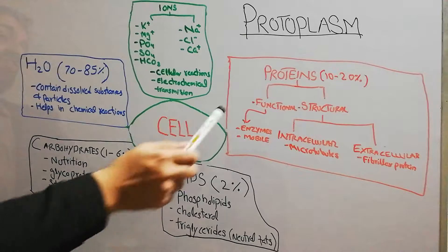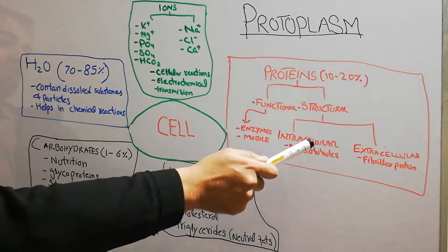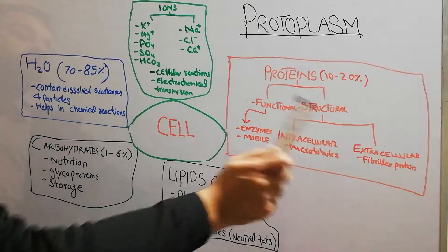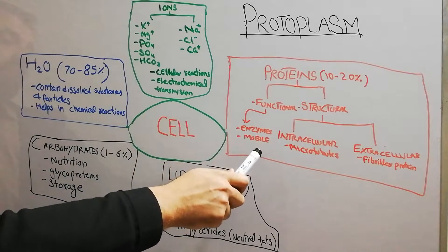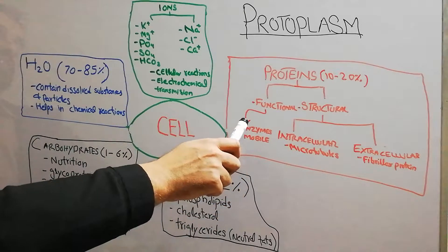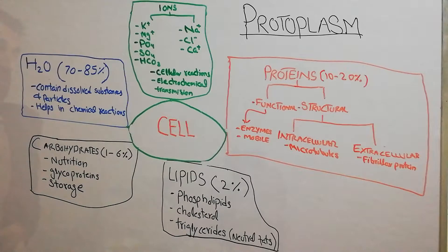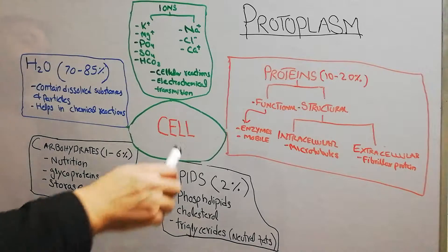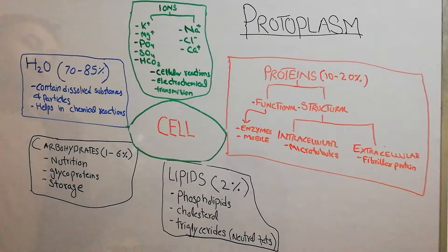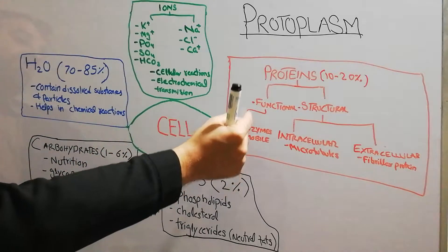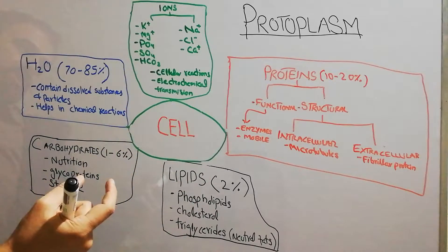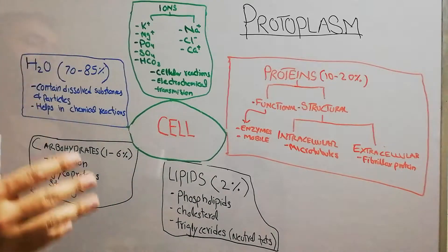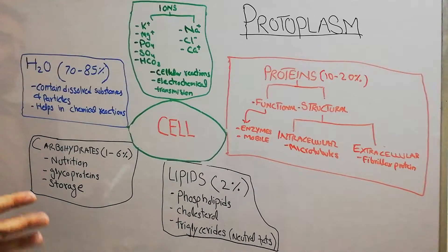Functional proteins are different from structural proteins because they are mobile — they can move, while structural proteins are fixed in their position. Functional proteins can move around in the cell and help in achieving cellular reactions. For example, if the cell wants to make energy from some substances, the functional proteins in the form of enzymes will help make energy out of food substances. There are many enzymes, functional proteins, and structural proteins which we will study in further chapters.